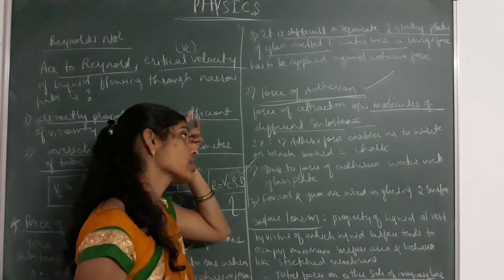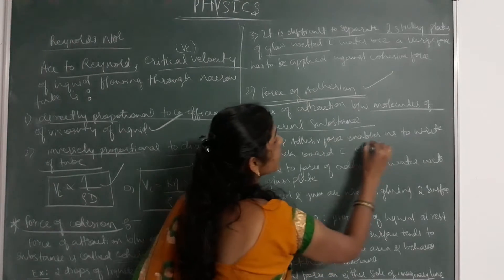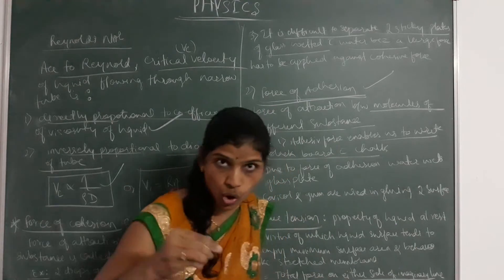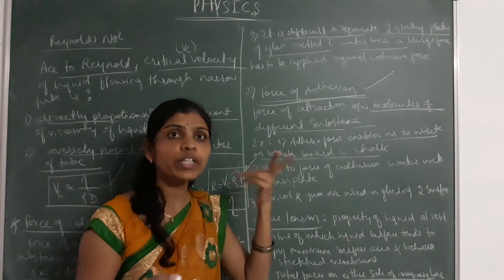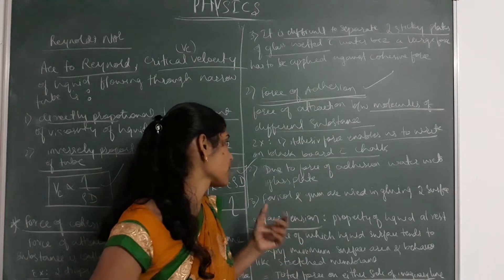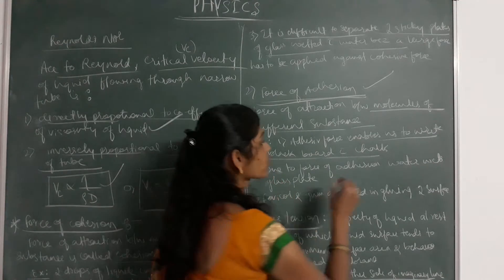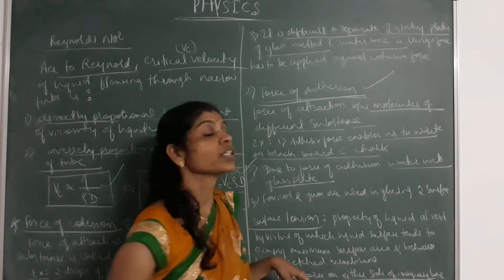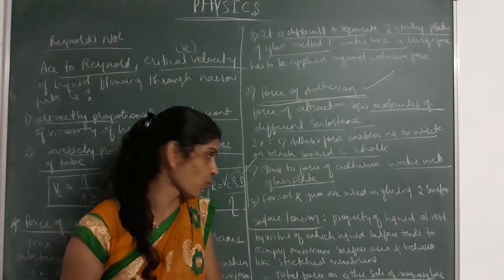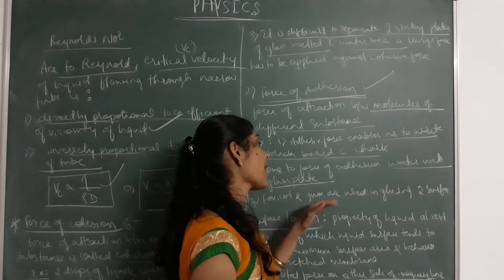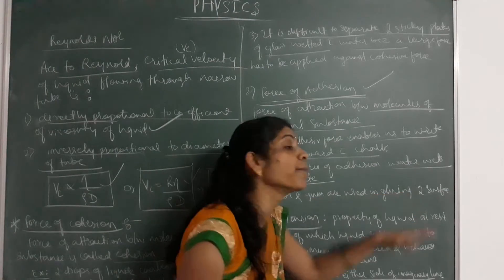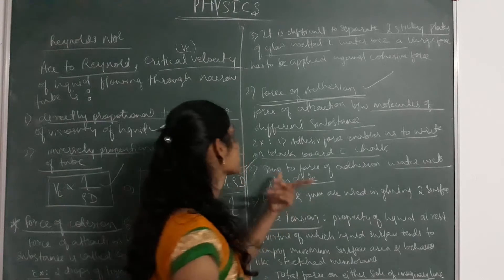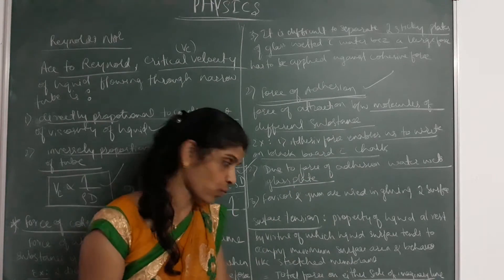Some examples of adhesive force: adhesive force enables us to write on a blackboard with chalk, because chalk and blackboard are two different kinds of substance. Due to force of adhesion, water wets glass. And third, chemicals and gum are used in gumming of two surfaces. These are some of the examples for adhesive force.